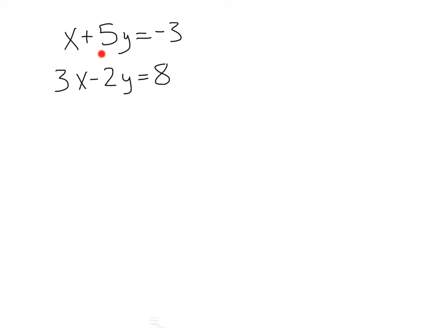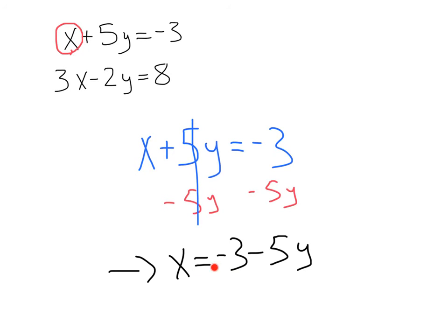Well, yeah, okay. The easiest one is actually a variable with no coefficient or no number next to it. So let's focus on this x right here, trying to get that all by itself on one side of the equation. So if we take that equation, x plus 5y equals negative 3, let's go ahead and subtract the 5y from each side. That's going to let these cancel out, giving us x equals negative 3 minus 5y.